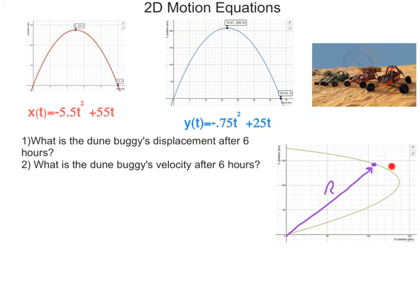Now here is the actual parametric curve graphed out, and so if I'm looking for the object's displacement, that's from the starting position to whatever the ending position is. Here we're looking at 6 hours, so that's somewhere in here, and I want to know that displacement there.